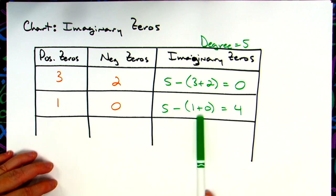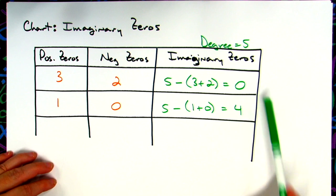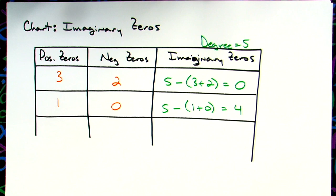That will tell you how many imaginary zeros you have — pretty straightforward. It's definitely something you need to memorize from a pattern, but once you get it, this is a relatively simple concept. Thanks for watching. If the videos are helping, please be sure to share with your friends so they can benefit too.